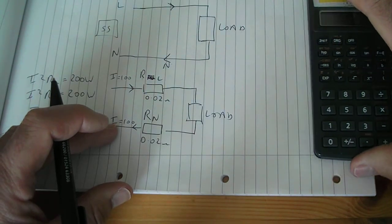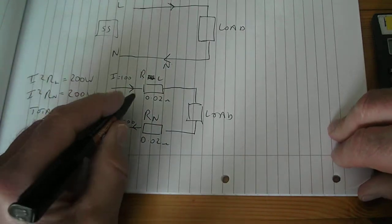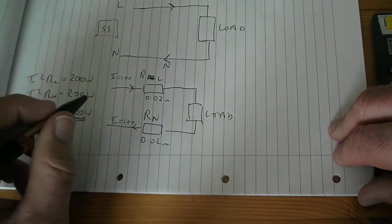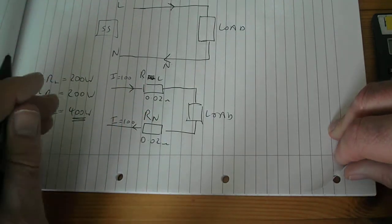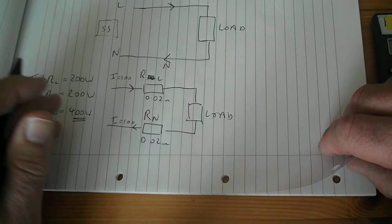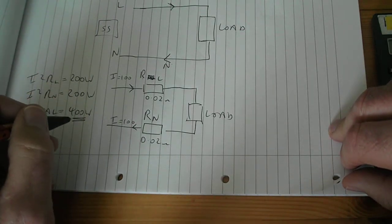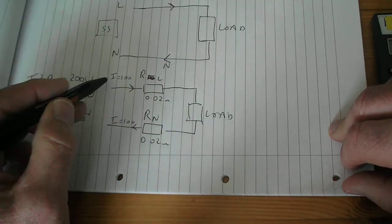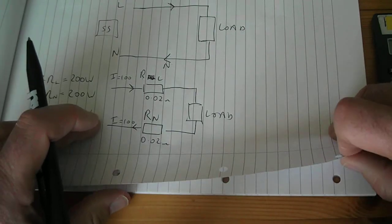And that's why current really is the enemy of the electrical engineer. Because by keeping our current levels down we can do two things: we can reduce the losses in the cables, which costs your company money, and secondly, I can reduce the cross-sectional area of any cables that I'm going to use.